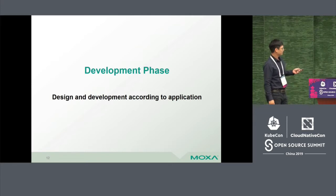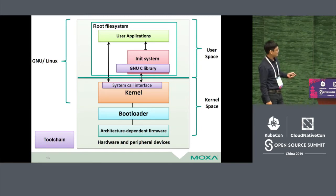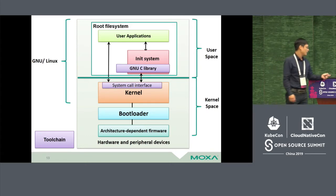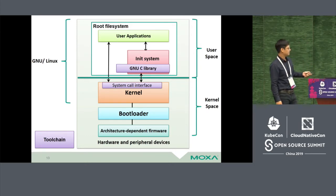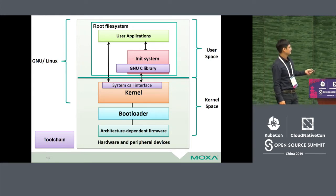In the development phase, this is the prototype for an embedded device. We have hardware, we have architecture-dependent firmware such as ARM and some BIOS, and then we have a bootloader, kernel, and system call interface inside. You can see the init system and user applications that are in the root filesystem, so we have user space and kernel space.